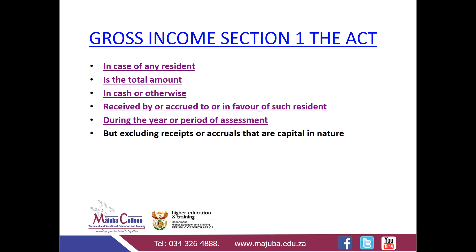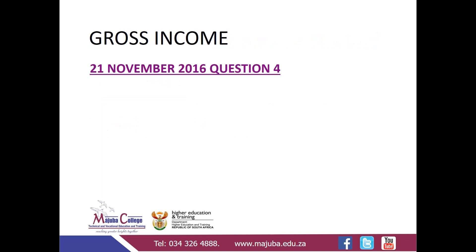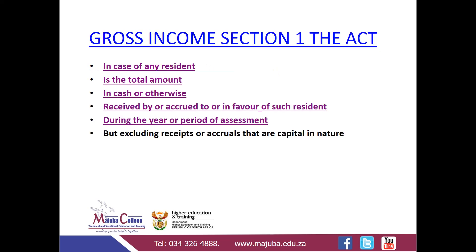Gross income is, in the case of any resident, the total amount in cash or otherwise received by or accrued to or in favour of such resident during the year or period of assessment, excluding receipts or accruals that are capital in nature. I have decided to make the definition applicable by looking at the previous question paper that was written on the 21st of November 2016. I'll quickly explain each component of the definition of gross income with reference to that question paper.